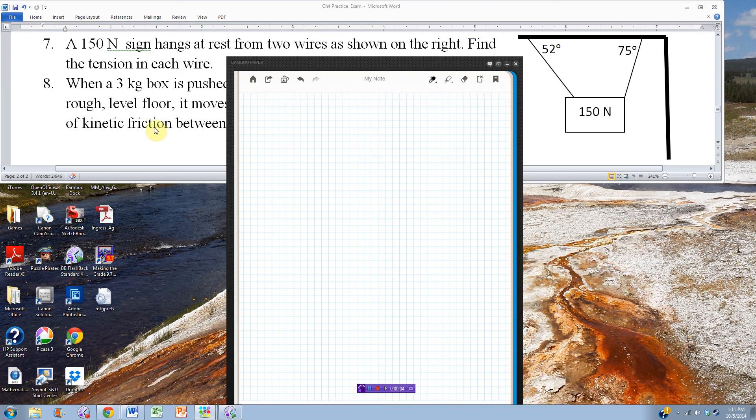This is chapter 4 practice exam number 7. We've got the sign hanging from these wires, and we want to find the tension in each wire.